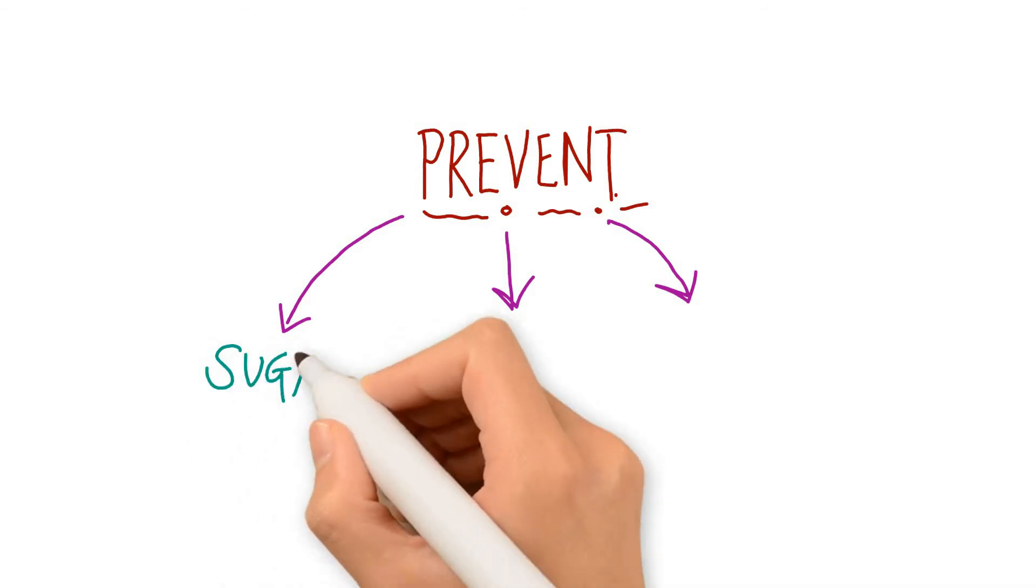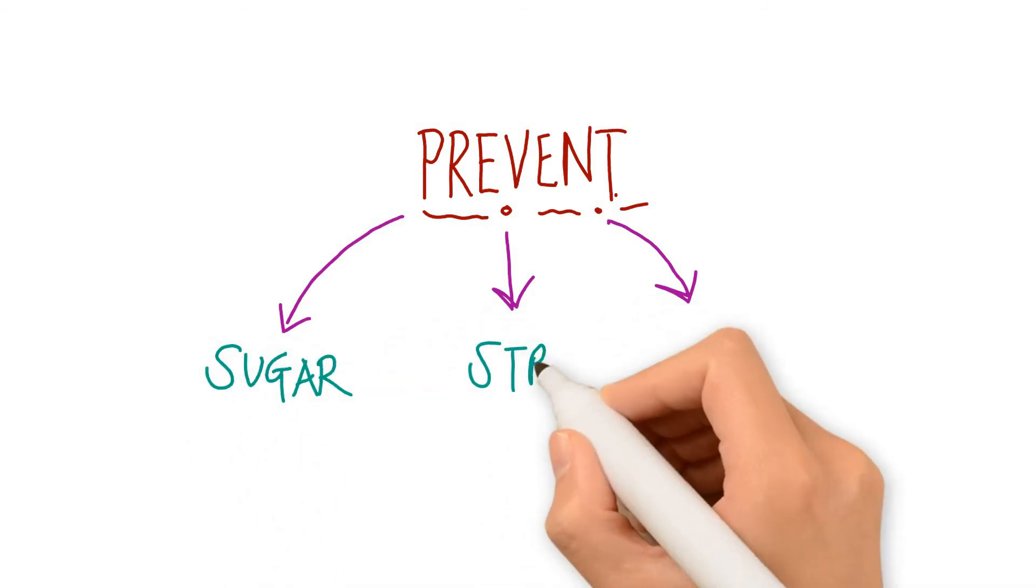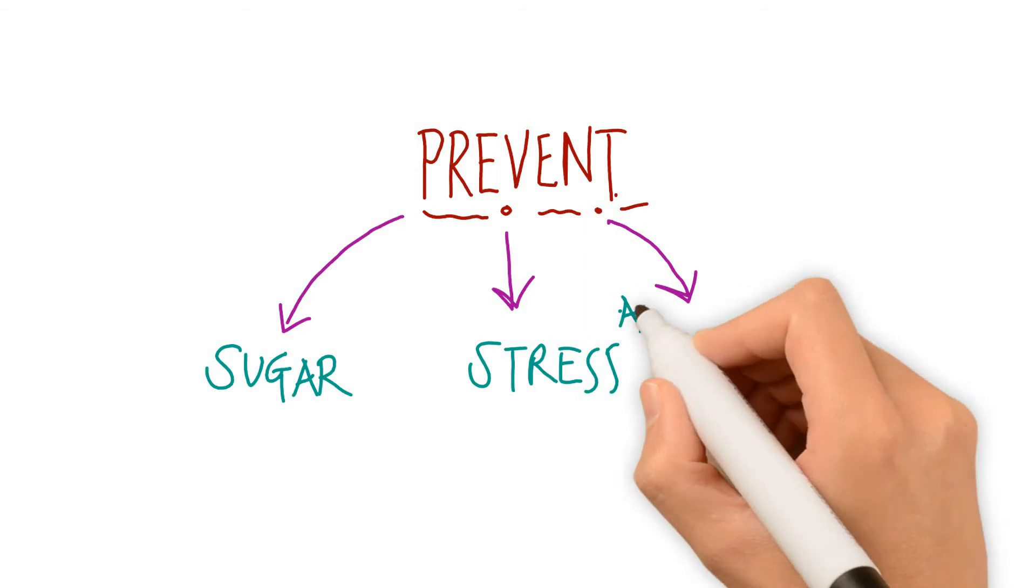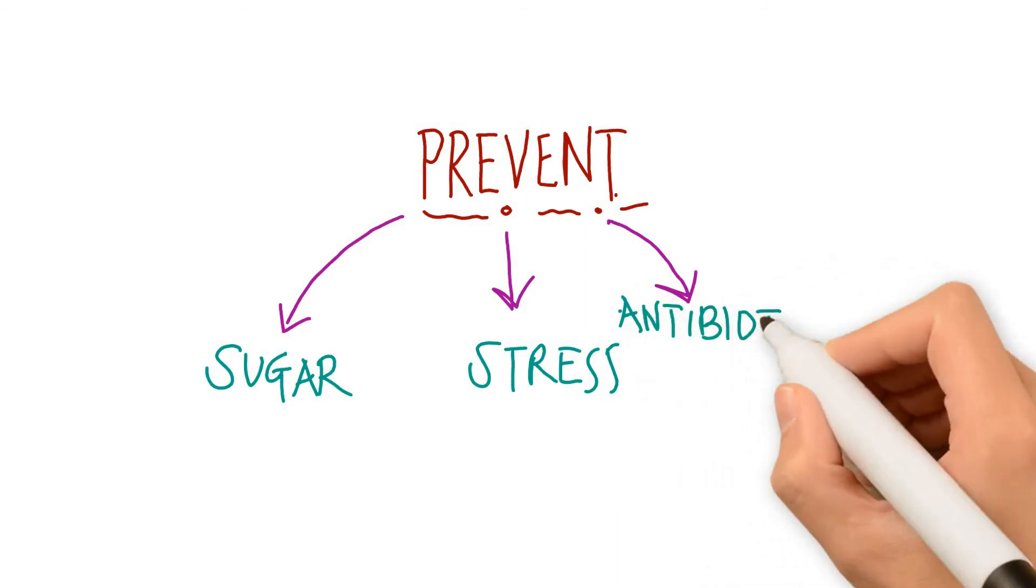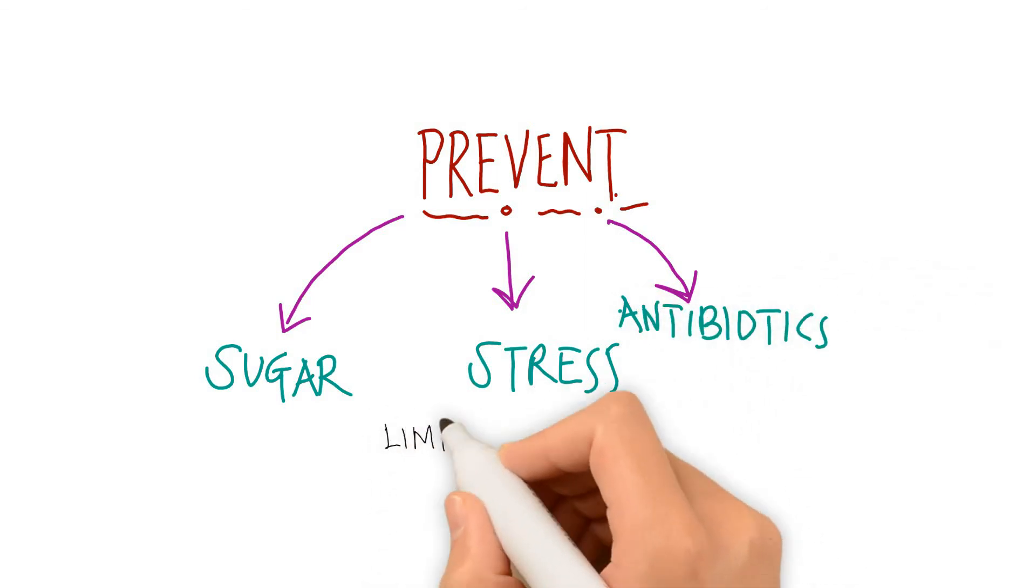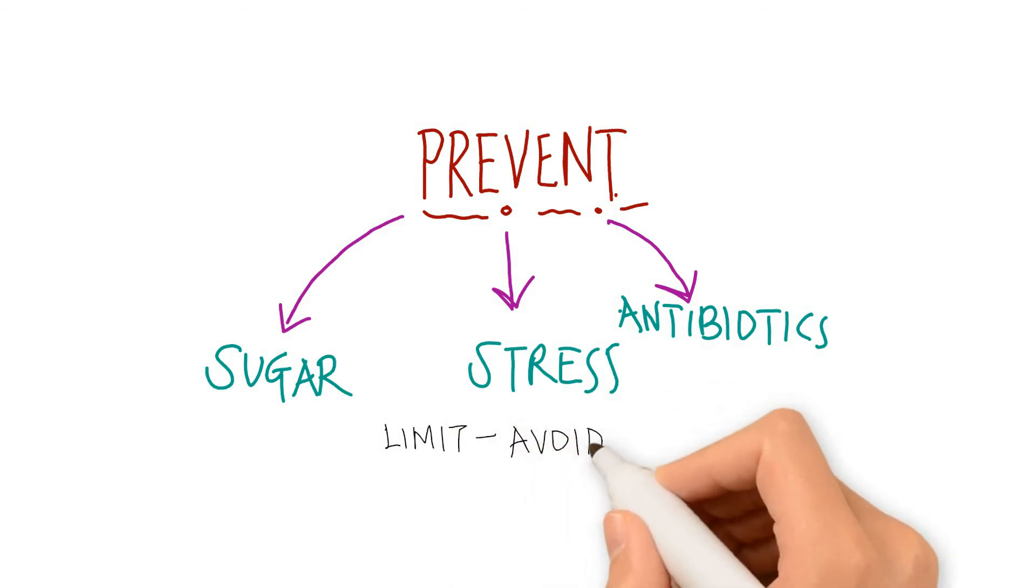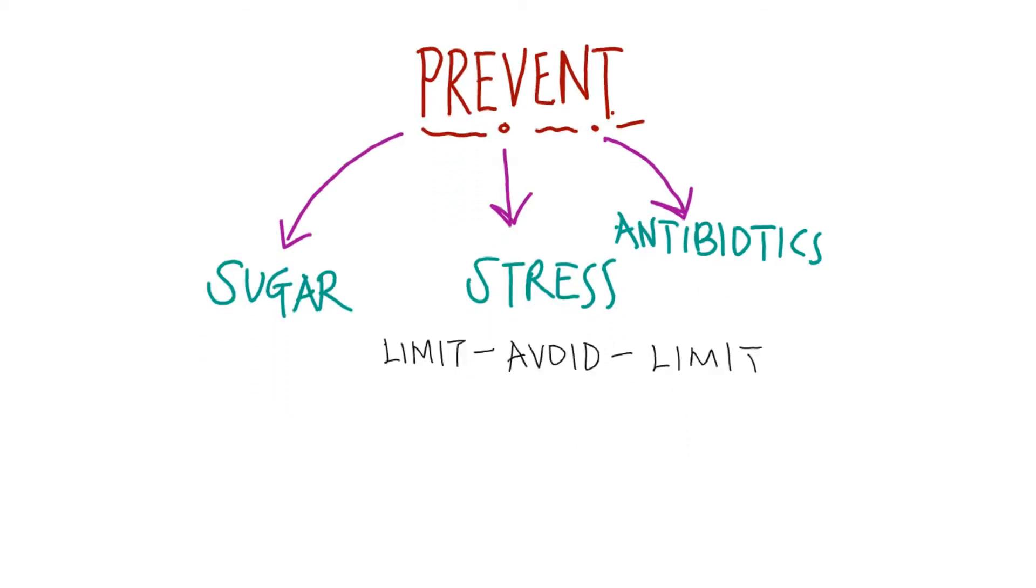Yeast thrives on sugar. Limiting your intake of simple sugars, white flour foods and snacks will help. Since stress and antibiotics can also mess with the balance in the vaginal area, keeping away from stressful situations and limiting your intake of antibiotics will also help.